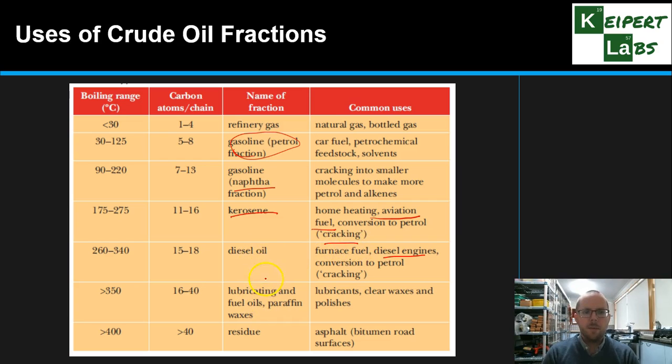And then at boiling points beyond 350, we get things like paraffin waxes. Things that you might have like Vaseline or paraffin oil for lubrication. And then the residue, which is even higher boiling point than that, is what makes up asphalt that we would use for bitumen, like when we're putting together roads. The sticky black stuff. So depending on the size and the boiling range of each of those fractions, they have very different uses. But they're all useful in their own way. But the important thing is for us to be able to separate them from each other and then purify them.